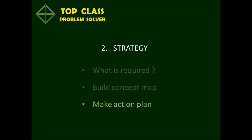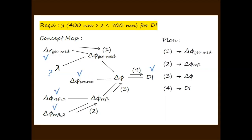The third step of the strategy is to create an action plan based on the concept map. We move through the problem in a forward direction. The first step is to find the phase difference due to the geometric path difference between the two rays. The second step is to find the phase difference due to reflection. The third step is to find the overall phase difference, and the fourth step is to write down the condition for destructive interference between the two rays.